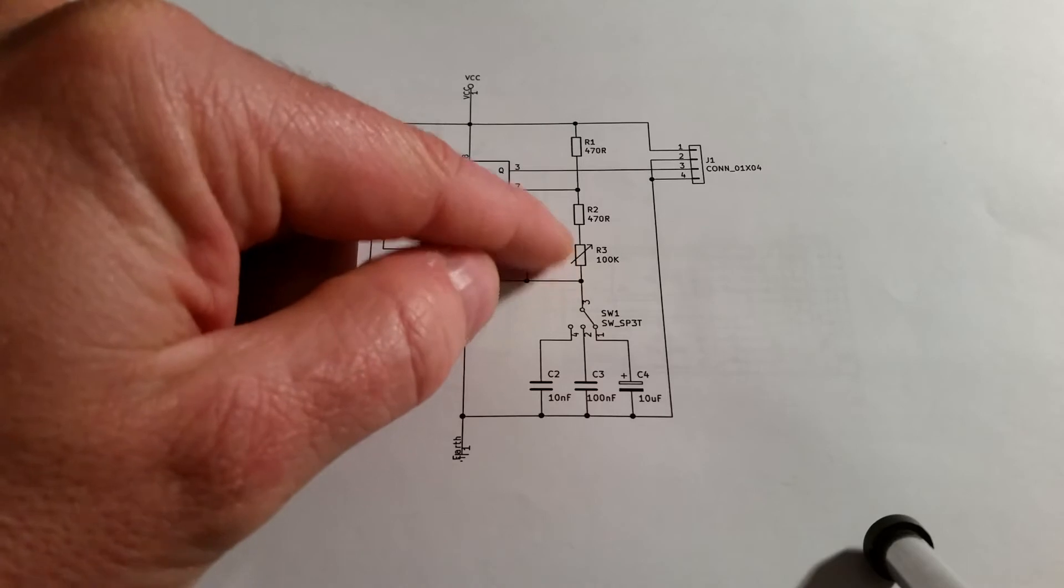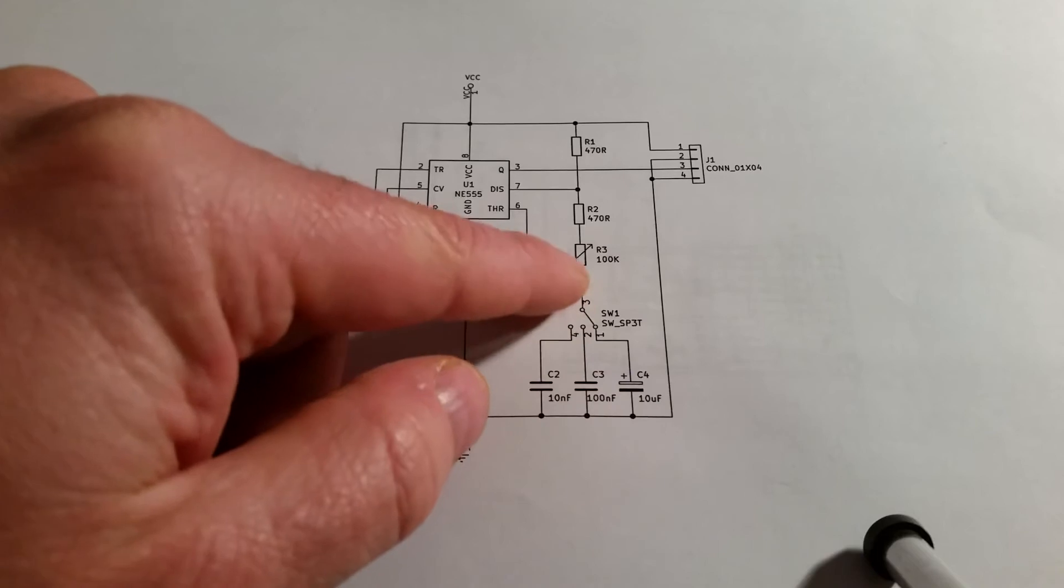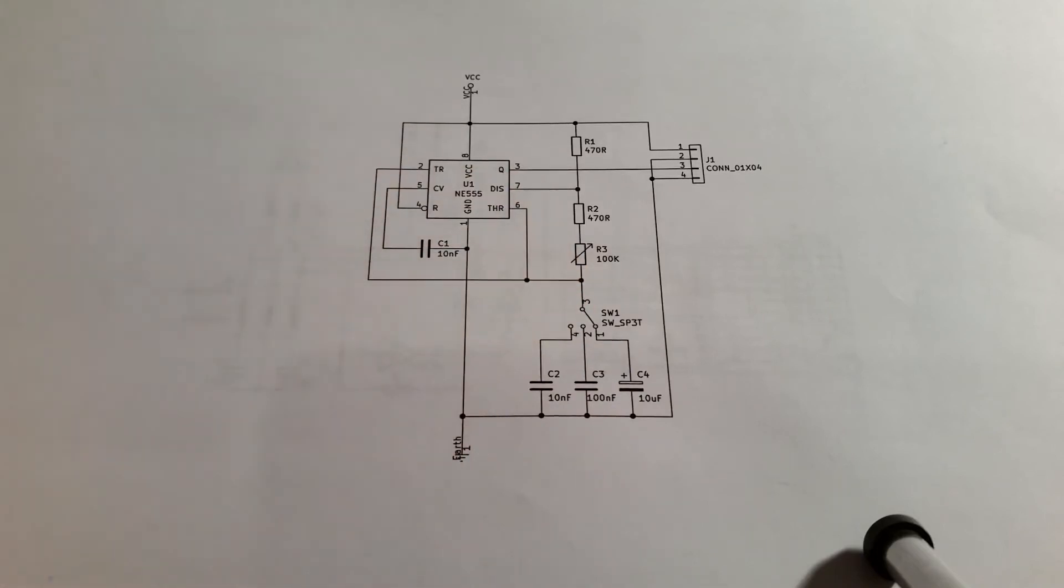And the potentiometer allows me to change the frequency. So this is like a frequency adjustment and then a range selection down here. But that's all the components that are required to make the oscillator.